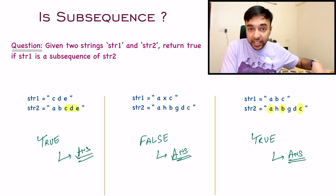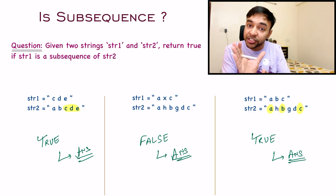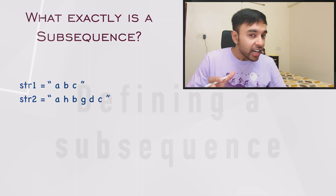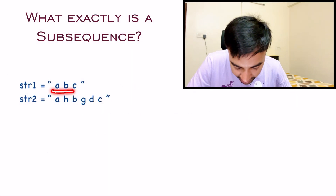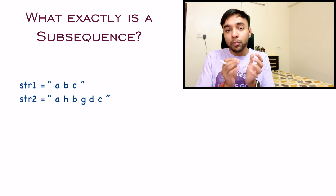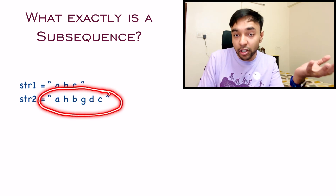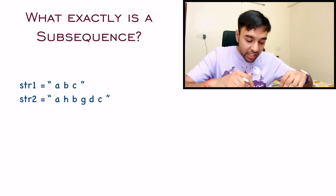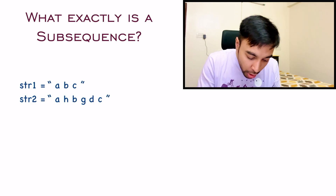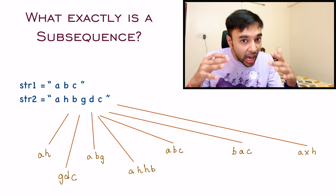So this is what this problem actually means. If you feel you've understood the problem statement, feel free to try it on your own. Otherwise, let's focus on what a subsequence actually means, because that is the root of understanding this problem. For a subsequence, you can generate any string that has characters from the original string in the same order with the same frequency. I have some sample strings and we will determine which of them are valid subsequences.